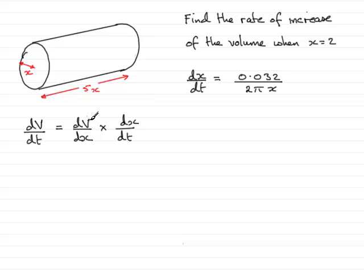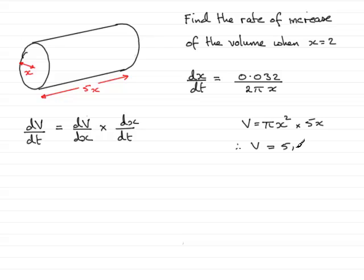Now for the rate of change of the volume with x, I need to find a formula that connects volume with x. The volume of a cylinder is given by v equals the area of the cross section, which is pi r squared — or in this case pi x squared — multiplied by the length, so that's multiplied by 5x. Therefore, we have v equals 5 pi x cubed.